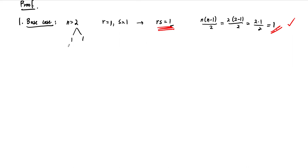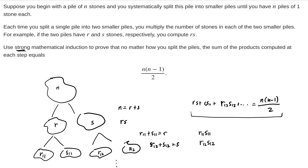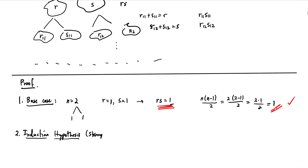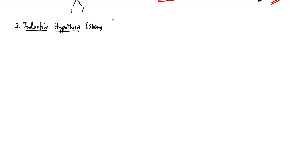The next step in the induction proof is to state the induction hypothesis. We were told to use strong induction. The indication in the problem that we should use strong induction — as opposed to weak induction — is that it says to prove that no matter how you split the piles. That's the key for strong induction. There are lots of different ways to start separating a pile, so we can't guarantee we take one stone out at a time.